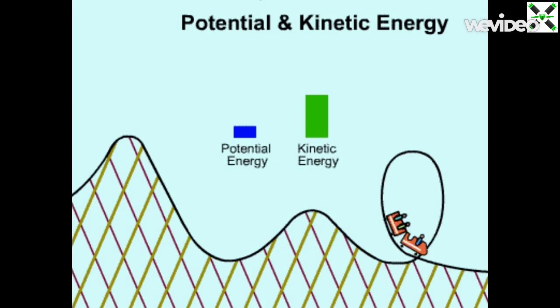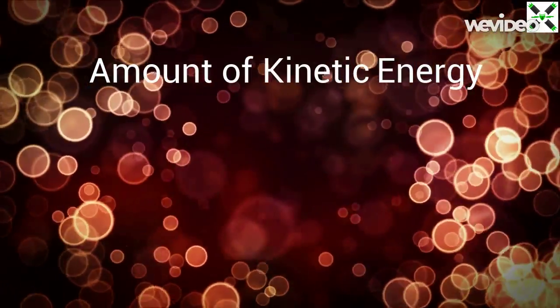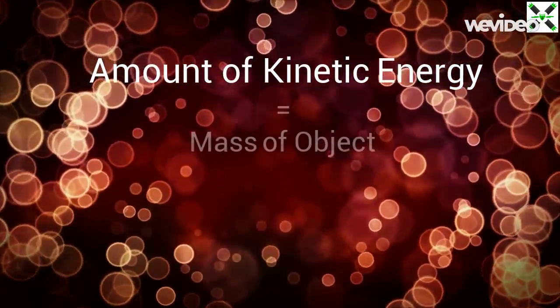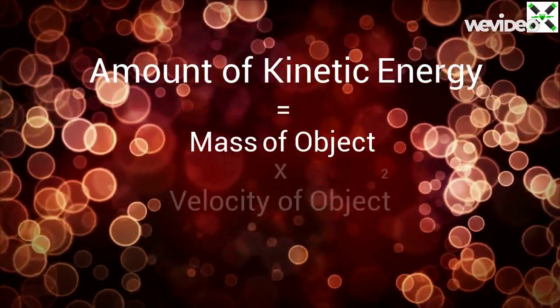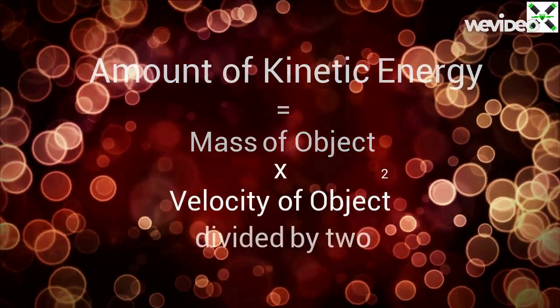For extra information, the equation for calculating the amount of kinetic energy an object has is: amount of kinetic energy equals mass of the object times the velocity of the object squared divided by 2.